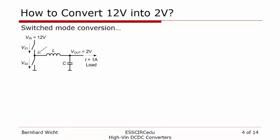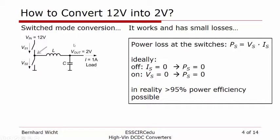To get to higher efficiency, we use switch mode conversion — the same setup, but now using a couple of switches and an LC tank to store the energy. Closing the upper switch brings energy into the system. Such a switch with its two states ideally shows no power losses: when off, there is zero current flowing so power is zero; when on, ideally there is zero voltage drop across the switch, so again zero power. Of course, in reality there are a couple of loss contributors, but we still have the chance to get to very high efficiencies in the 90% range.